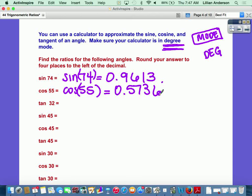Tangent is located two buttons above your 9 button. So when you type it in, tangent 32, close parentheses, you'll have 0.6249.